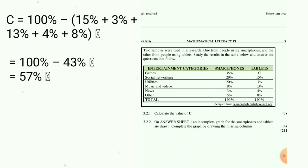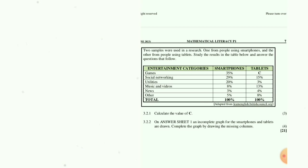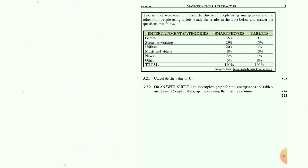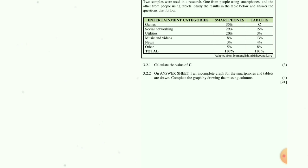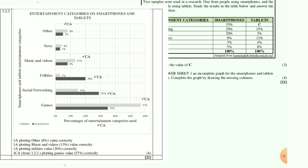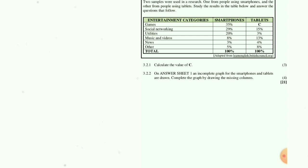Question 3.2.2: An incomplete graph for smartphones and tablets is provided on the answer sheet. Complete the graph by drawing the missing columns. The completed graph is shown on screen as per the memo — you can see how the columns should look. Completing it correctly earns four marks.